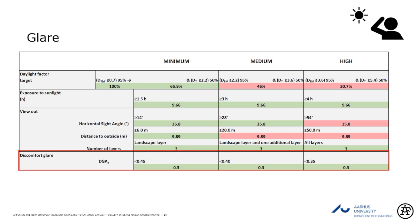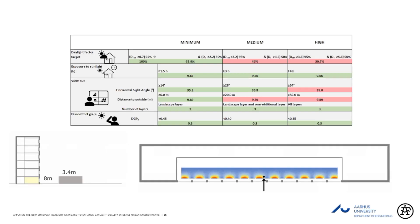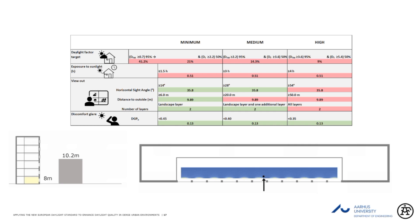The criteria stay green when met and go red when not met. We've created icons for the different criteria so you can see them more easily. Starting with 8 meters distance between buildings and 3.4 meter height, you can see how the daylight distribution works. We're already seeing that some higher targets are not met even with this low building when the facade is that close. As we increase height, more things turn red. Going through the progression, it becomes like a movie — you can see it more clearly in the presentation when it's made available.